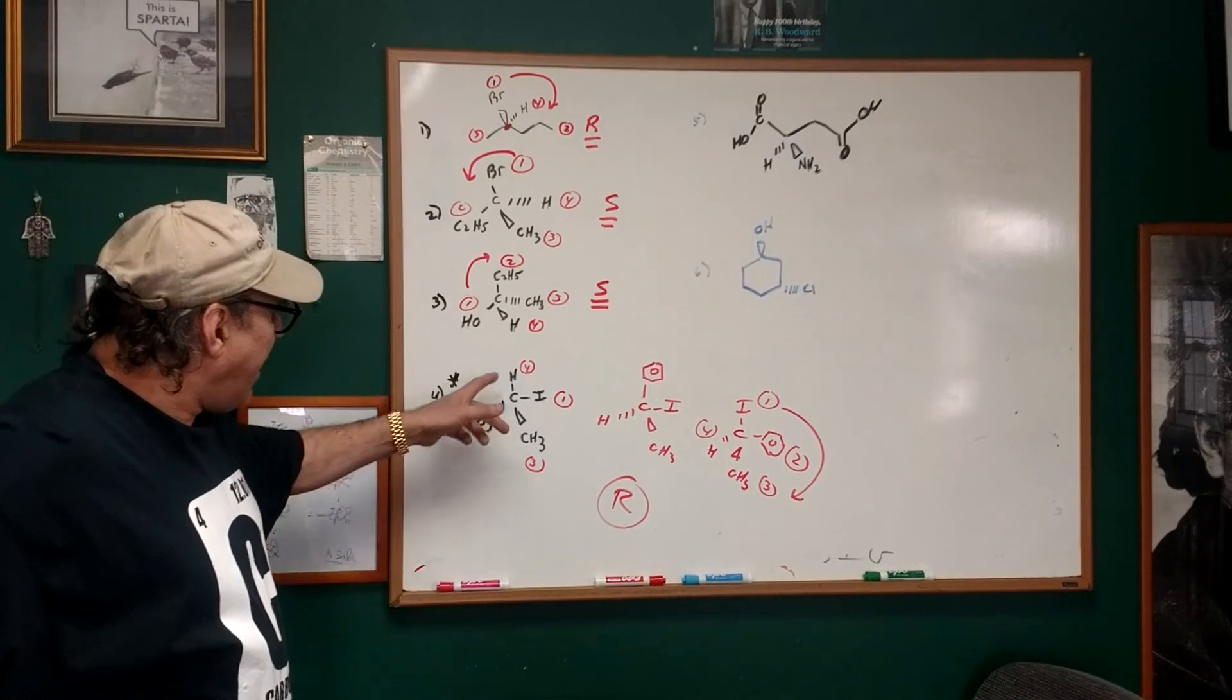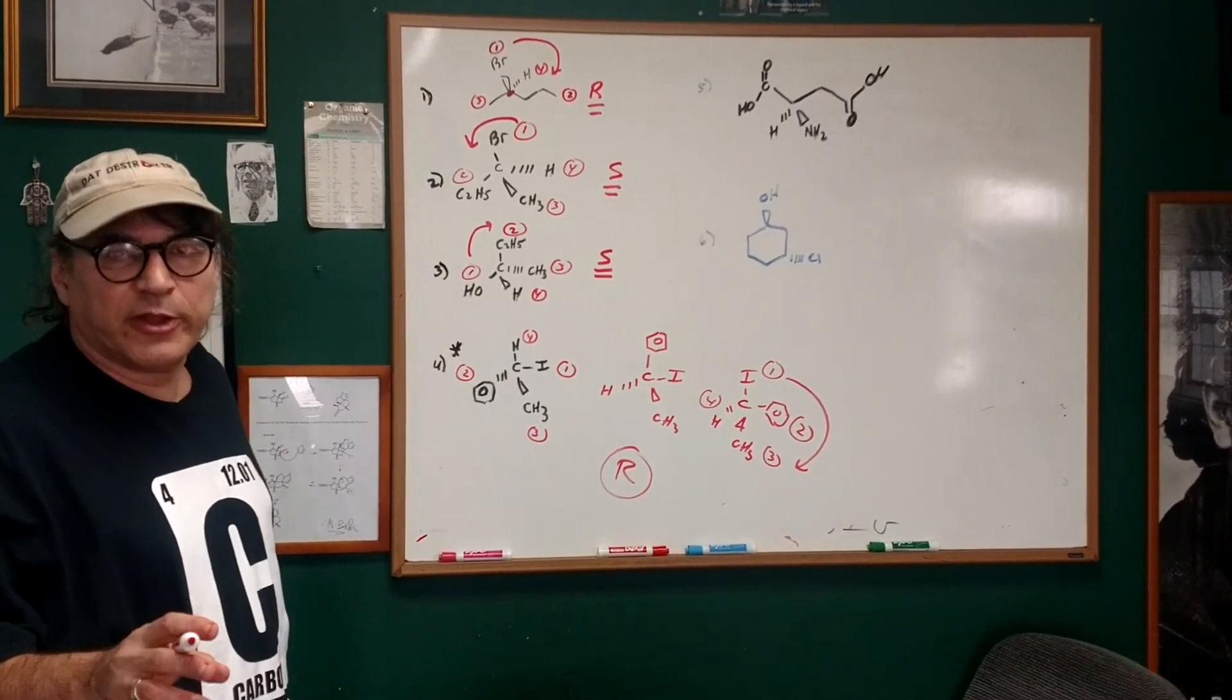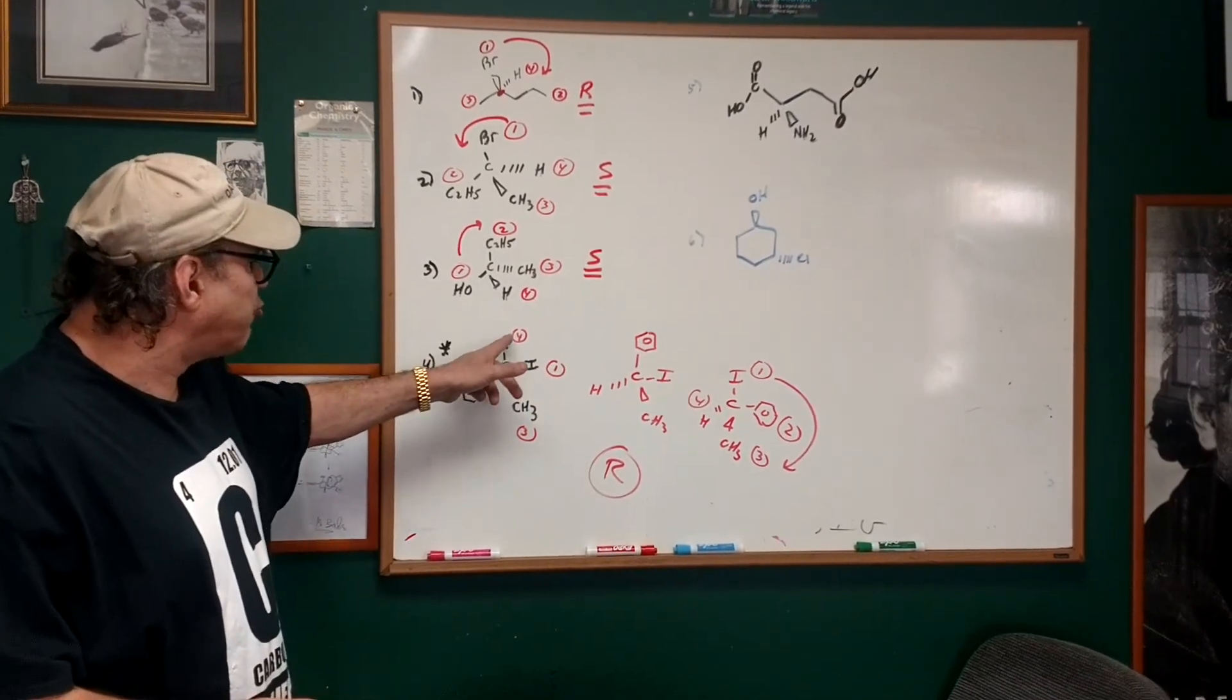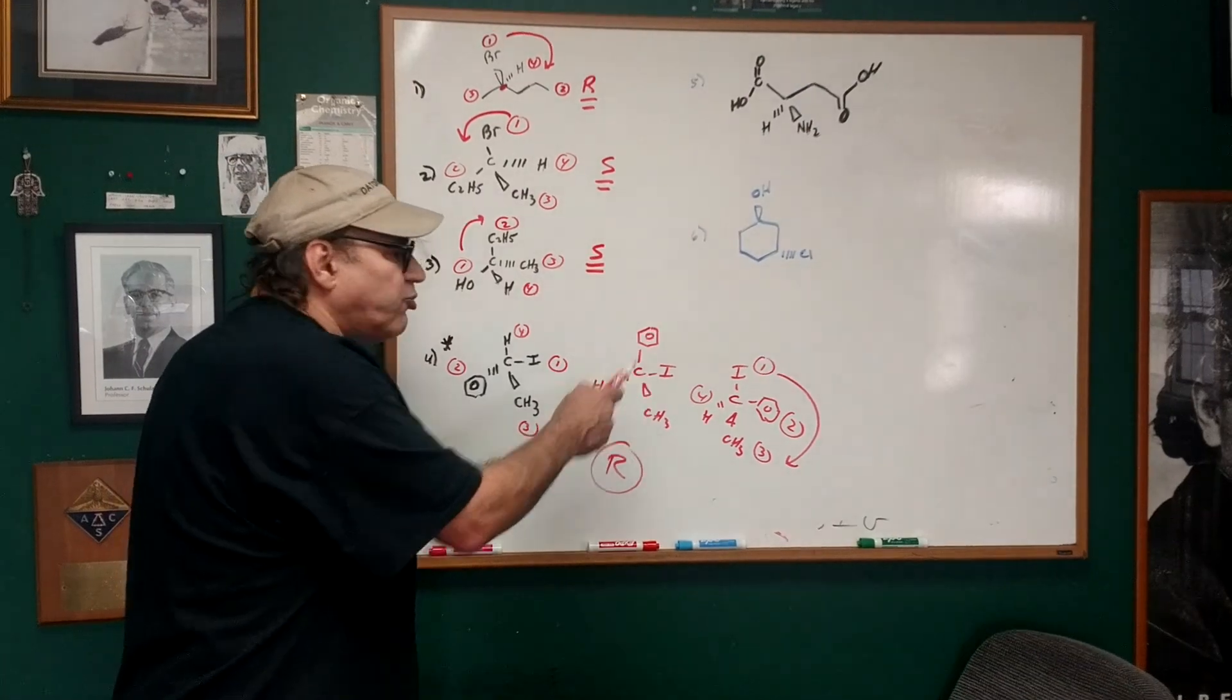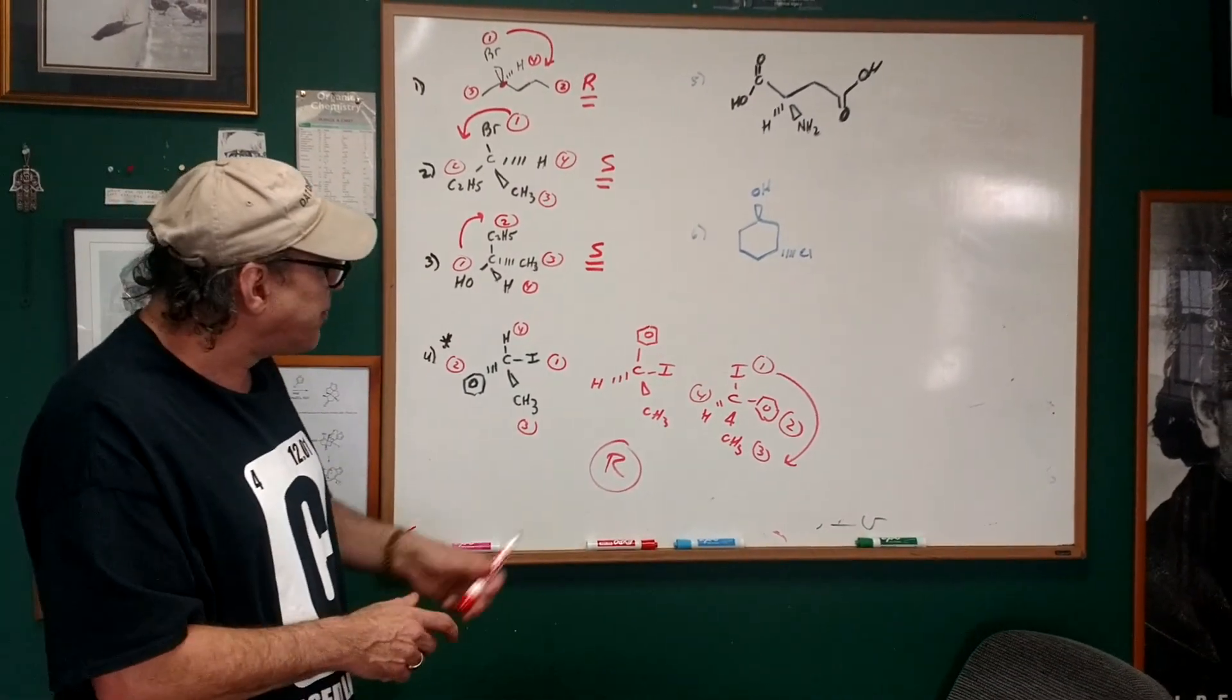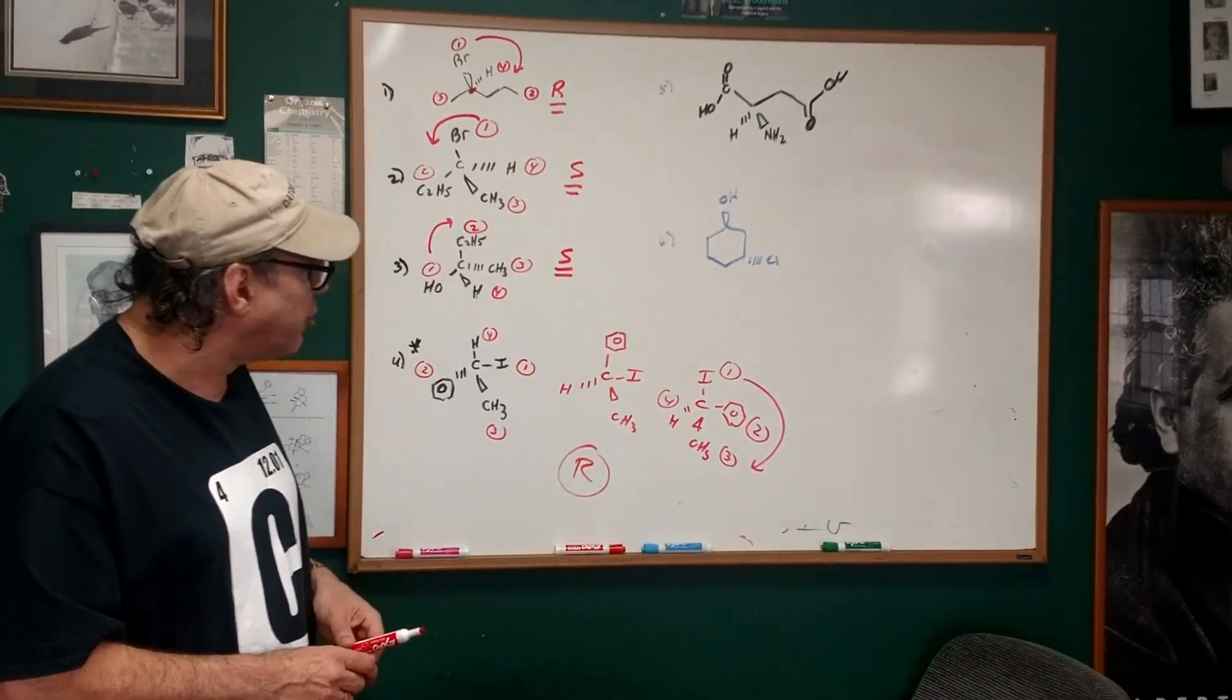So to recap, if group number four has nothing on it, you have to make two interchanges. The first interchange, I switch group number four wherever the dash is. And then I interchange any other two groups. I always pick the two groups that have no stereochemical designator on it. So that was these two groups.